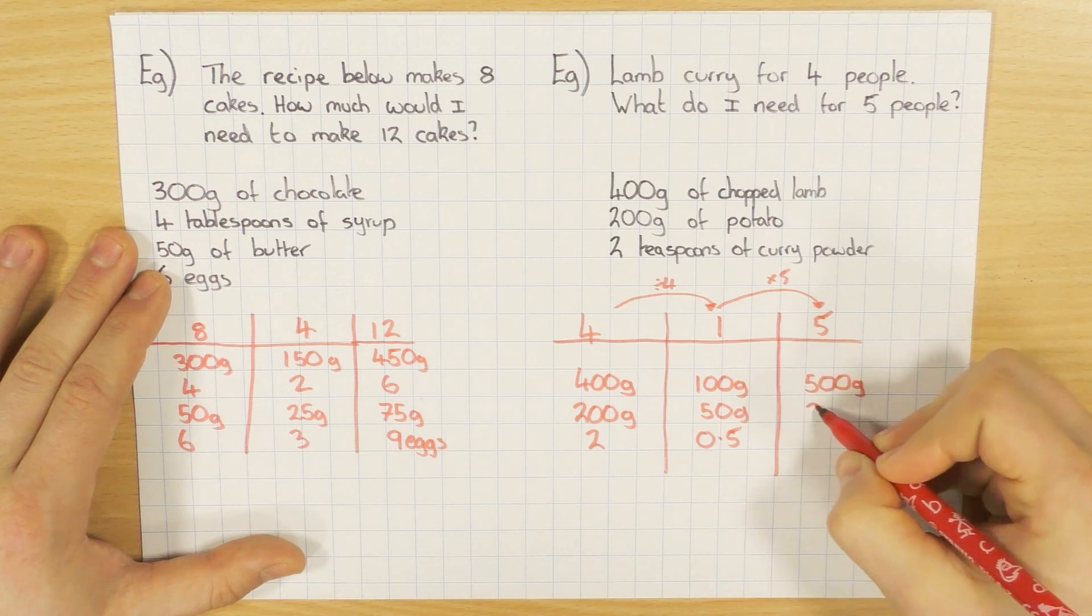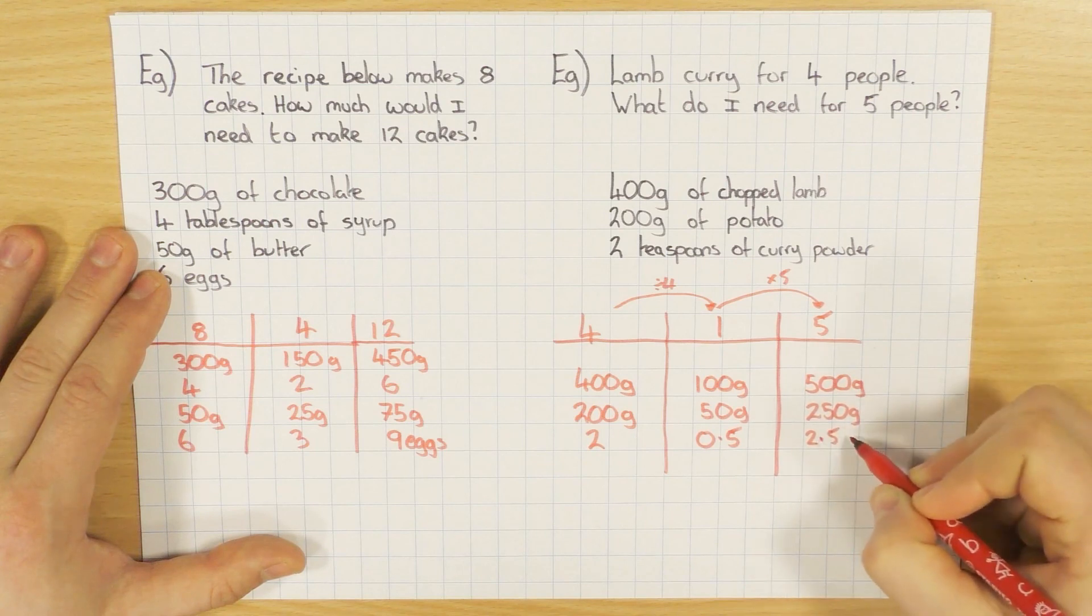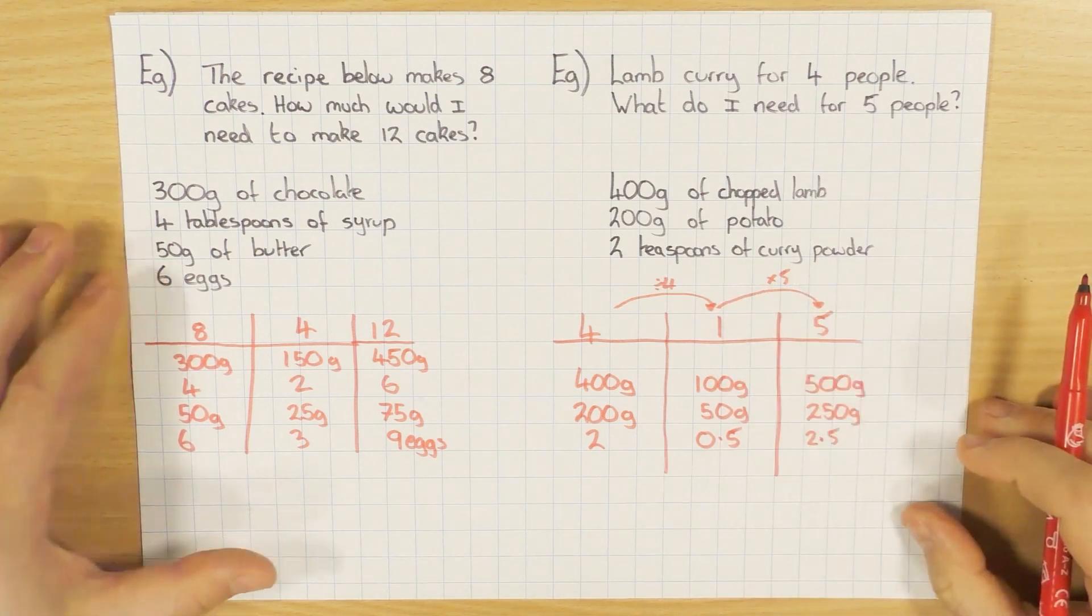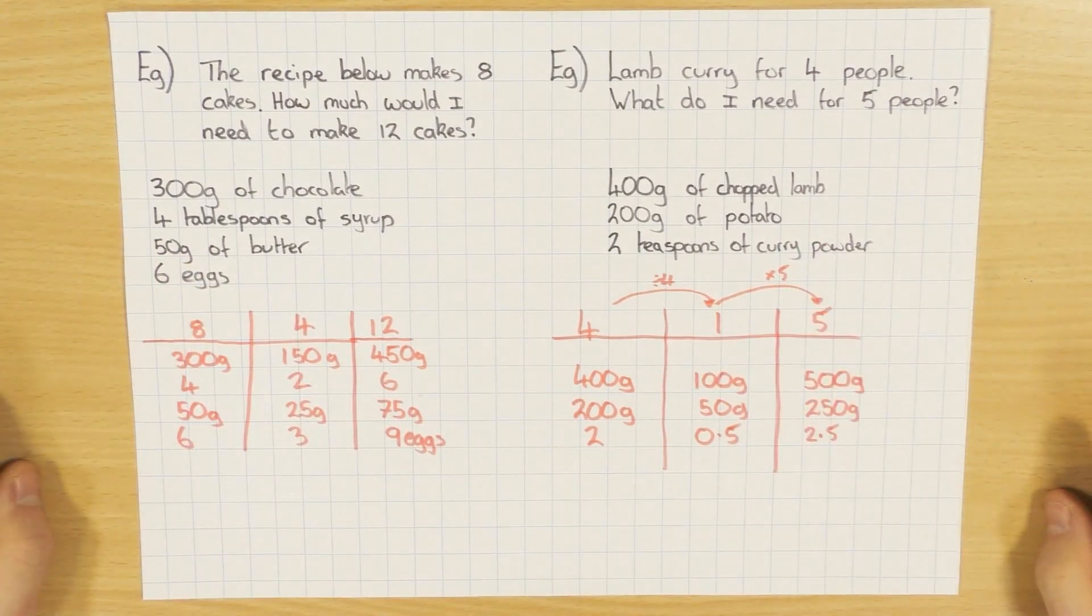500 grams, 250 grams of the potato, and then 2.5 or two and a half tablespoons of curry powder. So it's just how that might come in handy using the unitary method for recipes. Hopefully that helps, guys. Thanks for watching.